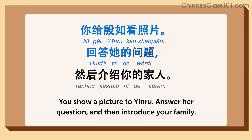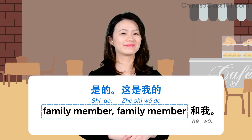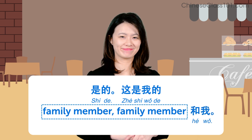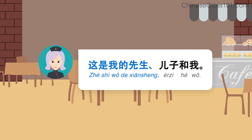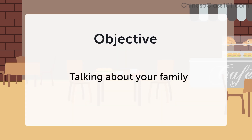你给音如看照片，回答她的问题，然后介绍你的家人。 这是你的家人吗？ How did you do? You can consider this practice exercise successful if you were able to answer in the given time, completed a pattern with your family members, and used the sentence pattern featured in this example: 这是我的先生、儿子和我。 Try this practice exercise again if you want to improve your fluency or skill in any of these areas.